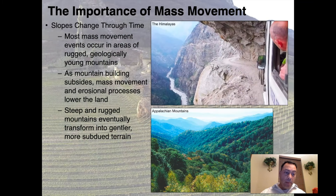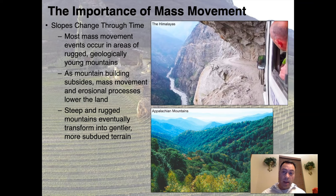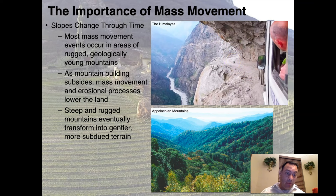Most mass movement occurs in areas that are rugged and geologically young. Those young mountains are where we see the largest magnitude of landslides and mass movement. The Himalayan mountains are a classic example because they have very steep slopes. Here's a photograph taken from a bus showing how steep everything is — they actually had to excavate right into the cliff wall to travel down this river valley.